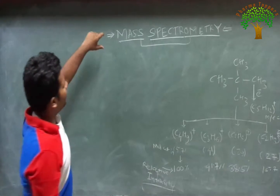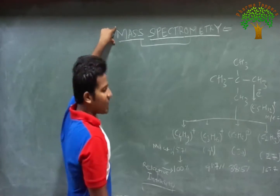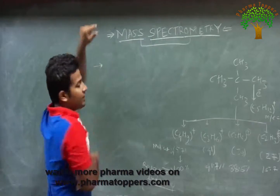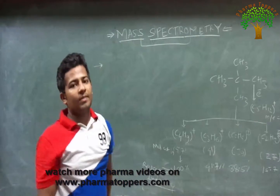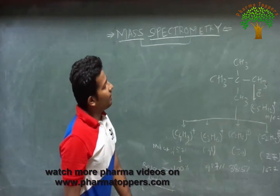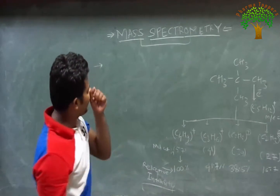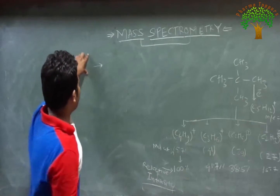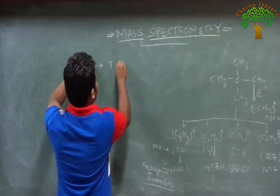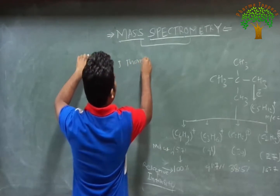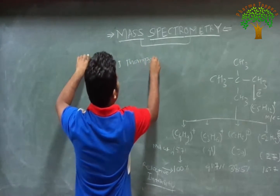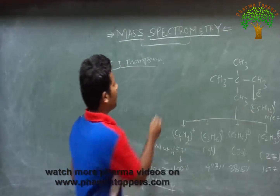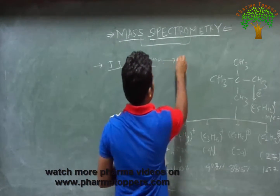Before discussing mass spectrometry, first we discuss about the history of mass spectrometry. Mass spectrometry was mainly discovered by J.J. Thompson, and that is why he is called the father of mass spectrometry.